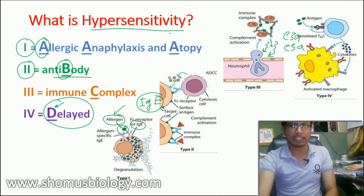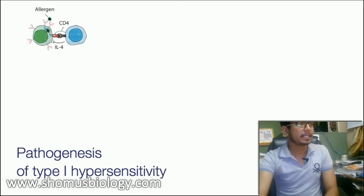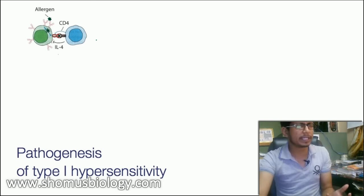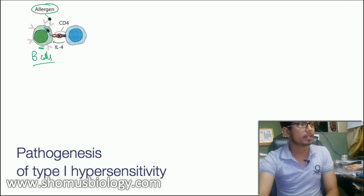Now let's look at each hypersensitivity type in more detail. Type 1 hypersensitivity is an allergen-mediated process. An allergen arrives and interacts with B cells, which have antibodies on their surface known as B cell receptors. One allergen interacts with two consecutive antibodies, providing a signal inside the cell.